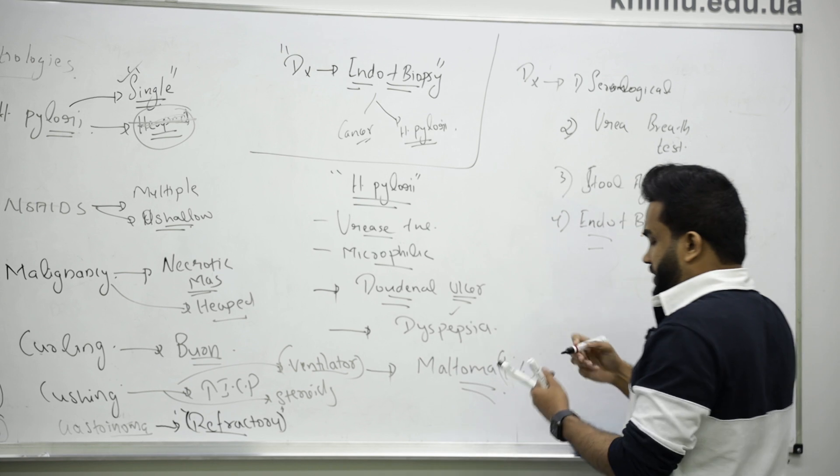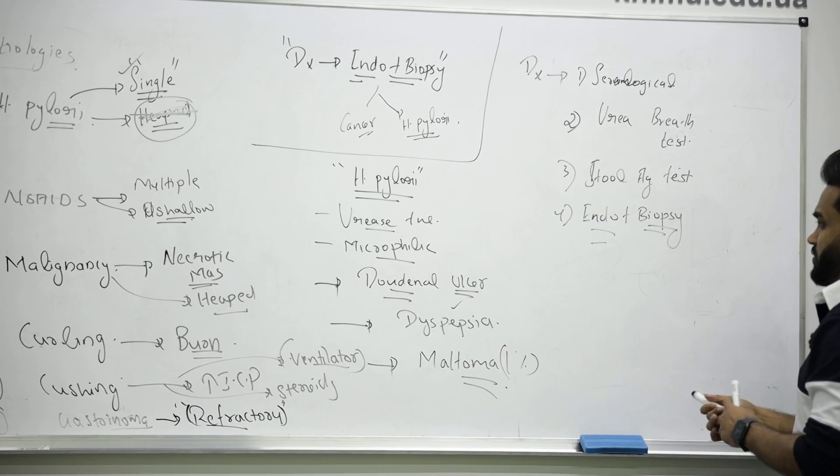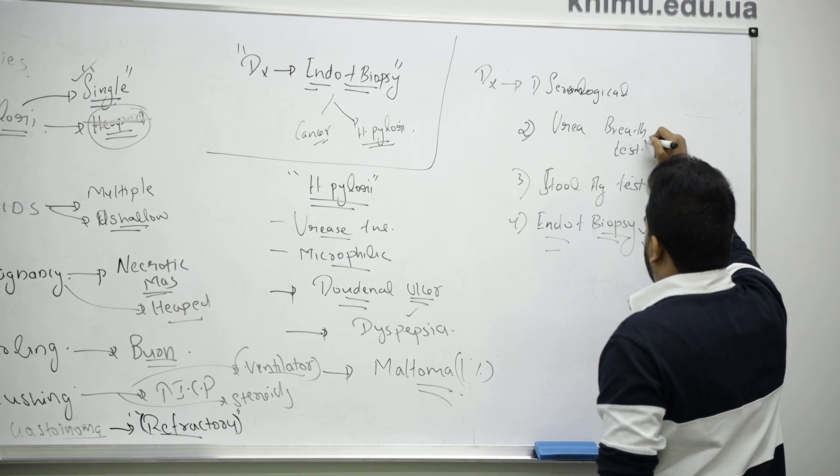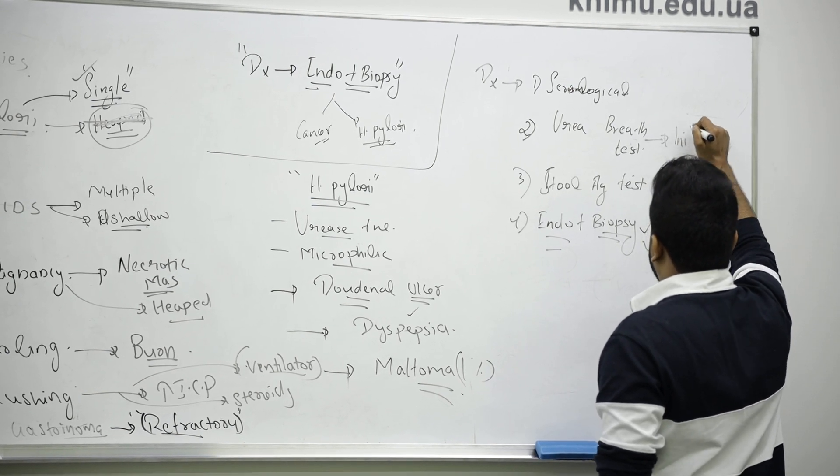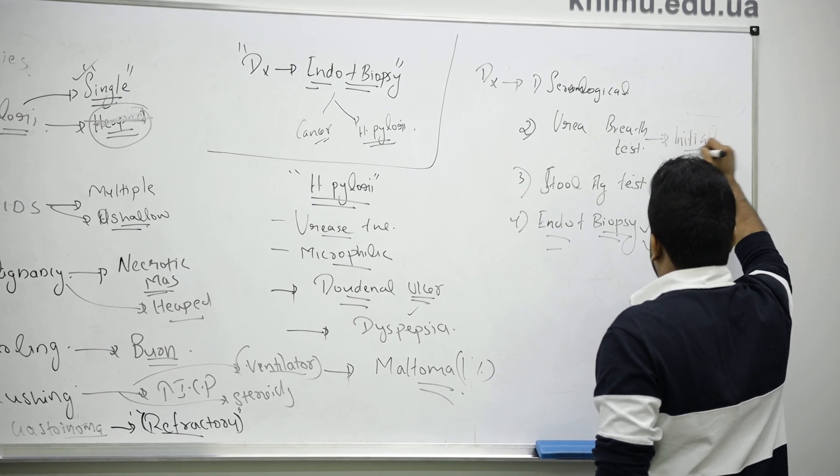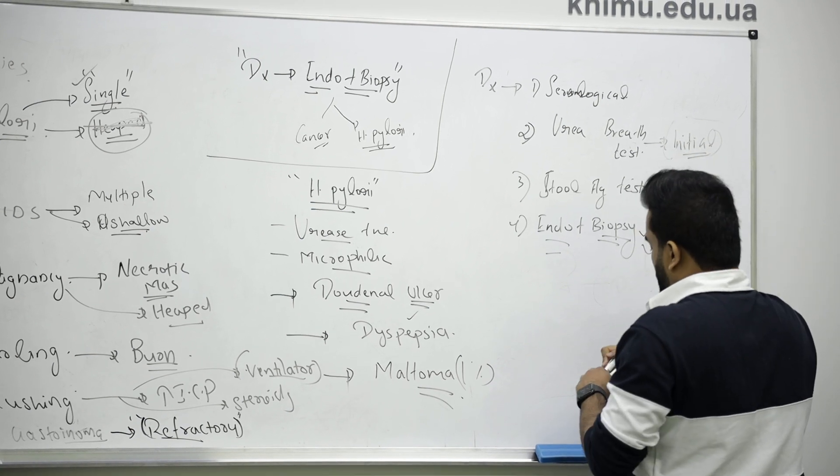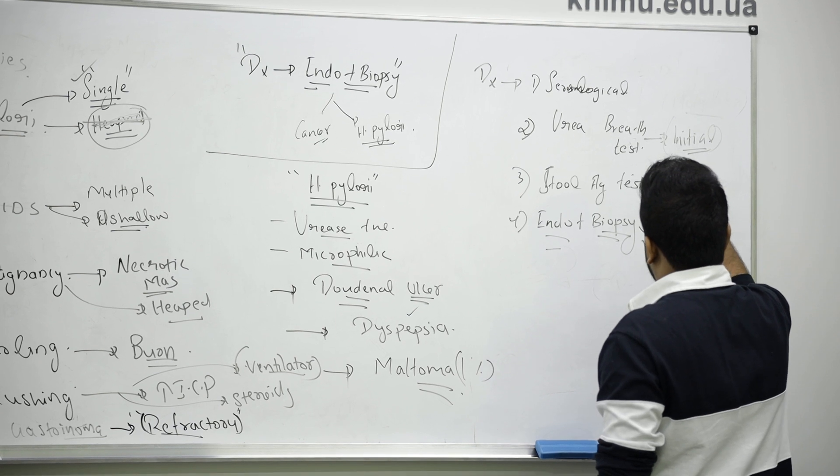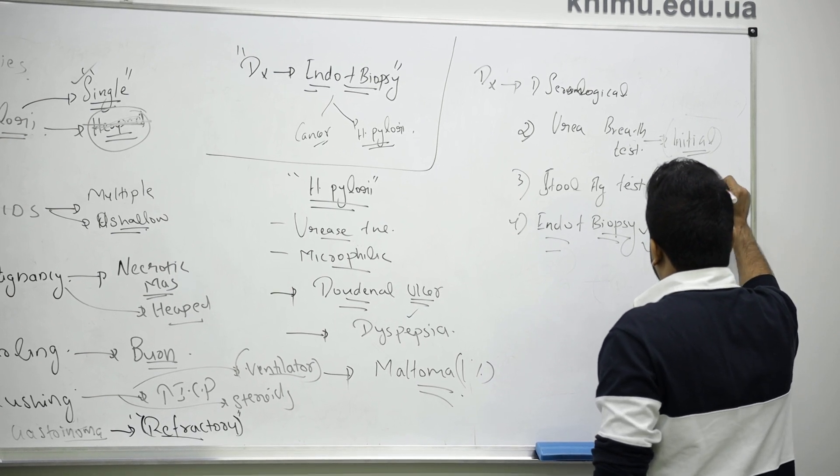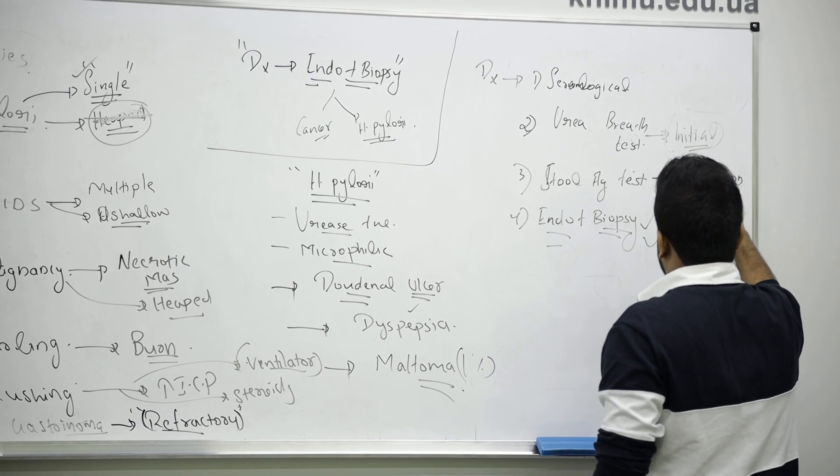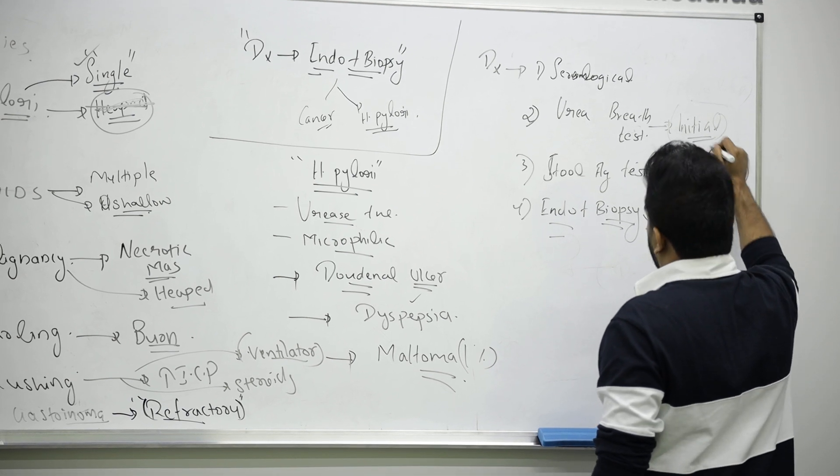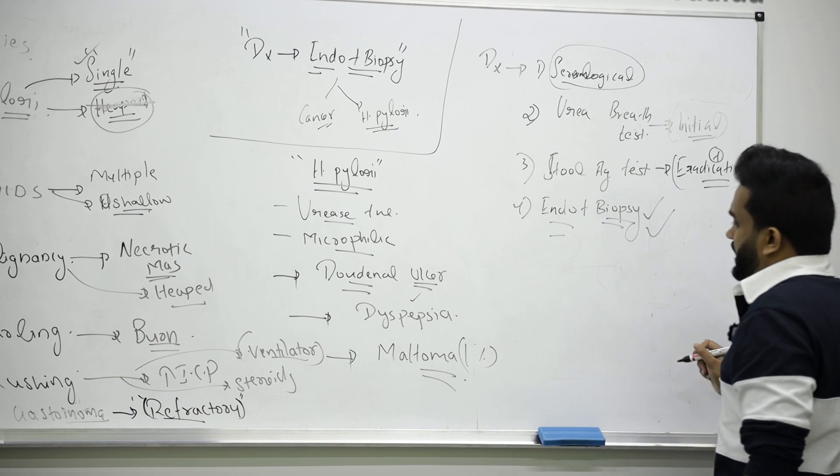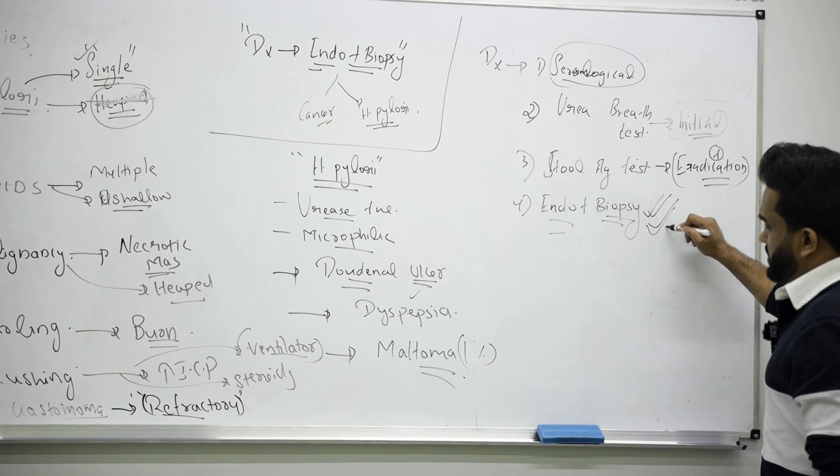Always remember, among all of these, the best one will always be endoscopy plus biopsy. Urea breath test is treated as the initial one. Stool antigen test to know eradication, whether the bacteria goes out of the body or not. Serological before and after treatment we can check, but they are not commonly used. Remember, the best one is always endo and biopsy.